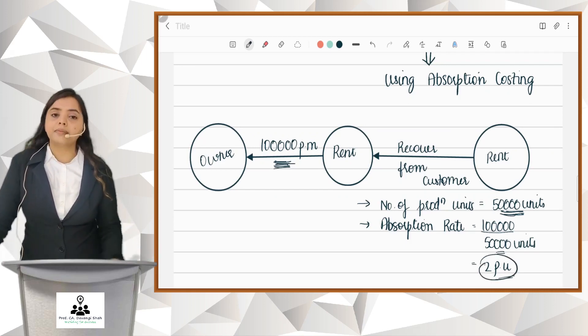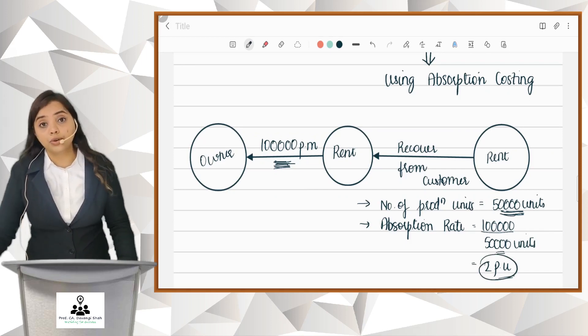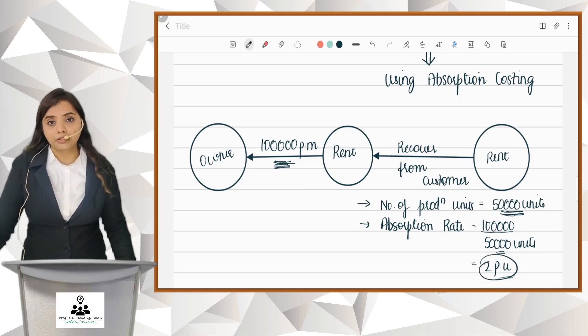This is absorption costing where your fixed cost is converted into variable to know how fixed overheads are to be recovered from the customer. That is absorption. So I hope you have understood what is absorption costing.